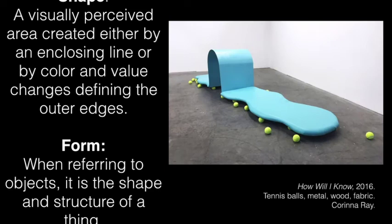Now we're going to move into shape. Shape is a visually perceived area created either by an enclosing line or by color and value changes defining the outer edges. Form refers to objects — it is the shape and structure of a thing. Shape is often considered a two-dimensional word, and form is often considered three-dimensional, but we'll use both and think about them in both ways. This is a piece called How Will I Know by Corinna Rae — just this really funky, silly shape hanging out in the world by itself.